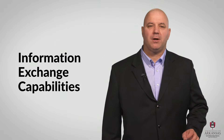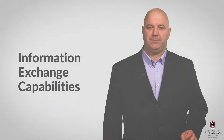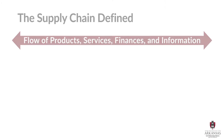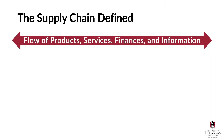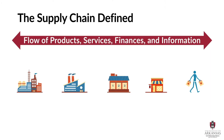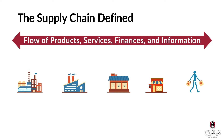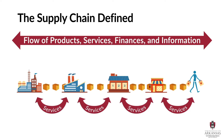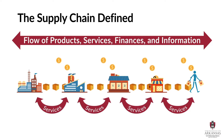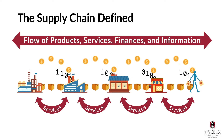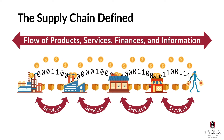Let's start by defining a basic supply chain. A supply chain is a set of three or more organizations linked together by one or more upstream and downstream flows of products, services, finances, and information from a source to a customer.